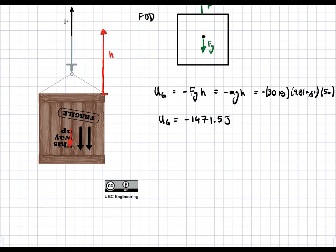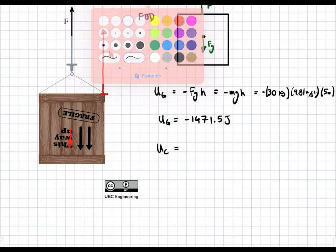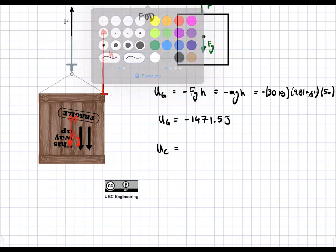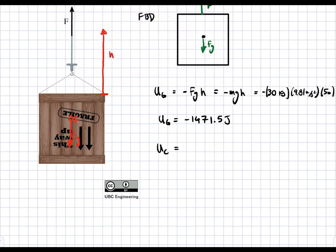Then we have the work due to the crane. This is going to be equal again to the force times the distance. But in this case, the force and the distance are in the same direction because F points up, so since they're in the same direction, we're going to have a positive sign here.